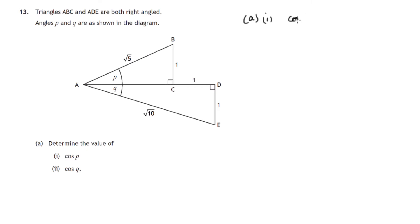So first of all, the cosine of angle P. Well angle P is in a right angle triangle. We can see that triangle here, A, B, C.